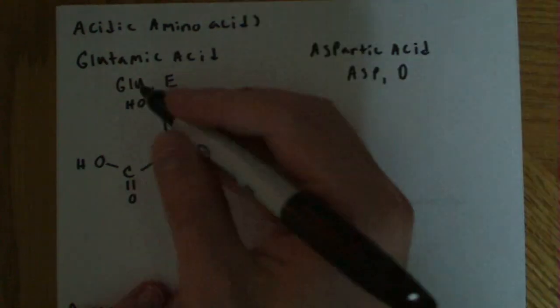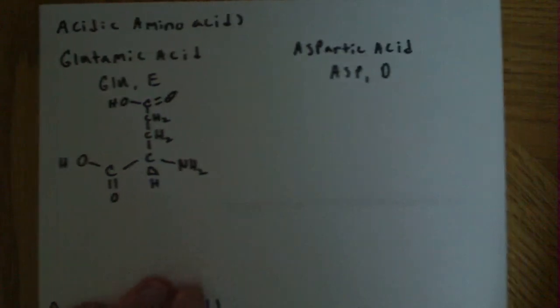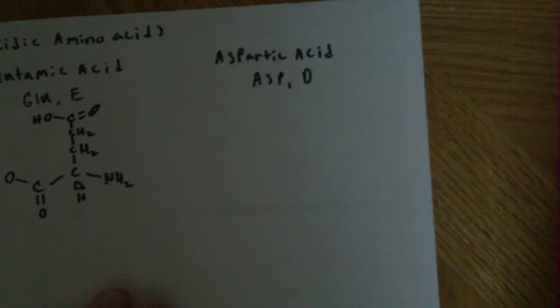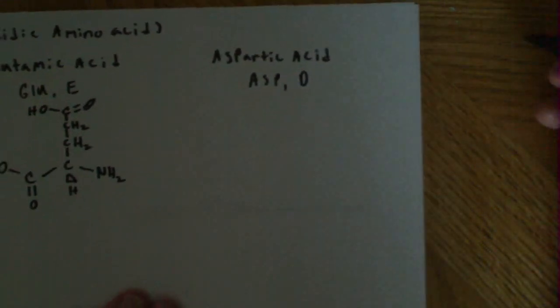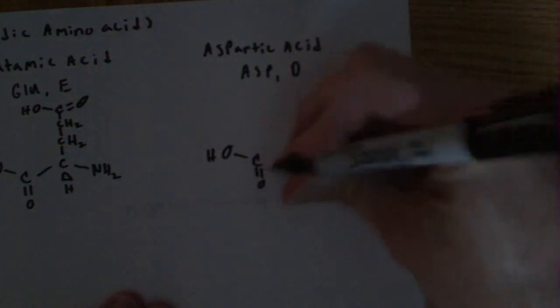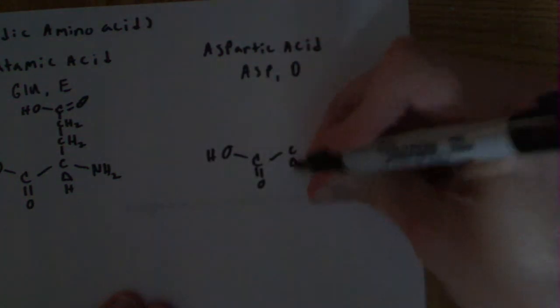And GLU and E are the abbreviations, the three-letter and one-letter abbreviations. So I'm also going to draw out aspartic acid here, which is the other acidic amino acid. And that has the same backbone, obviously, because like I've been saying, this is the same in all of them.